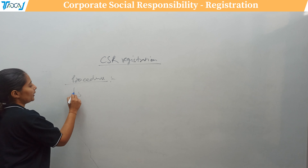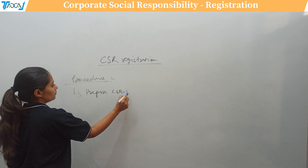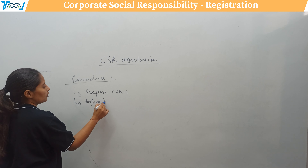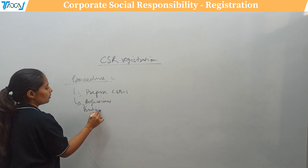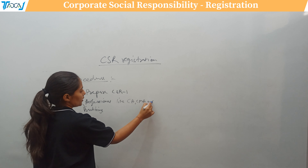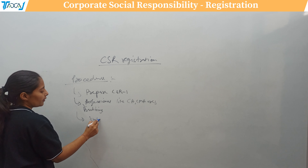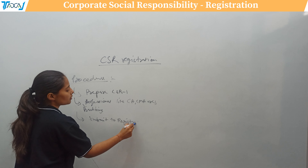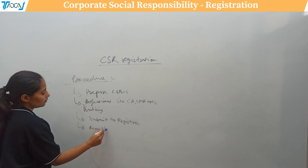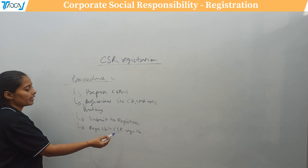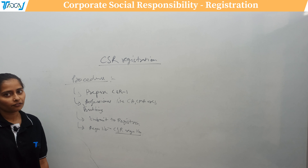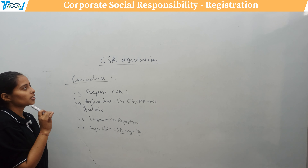For the procedure, first you prepare the CSR-1 form. Then a practicing professional — a CA, CMA, or CS — verifies the form. After that, you submit it to the Registrar, who checks the form and grants approval, issuing a CSR registration number. This registration number is valid for a lifetime, and once received, you can receive funds from any corporate to undertake CSR activities on their behalf.